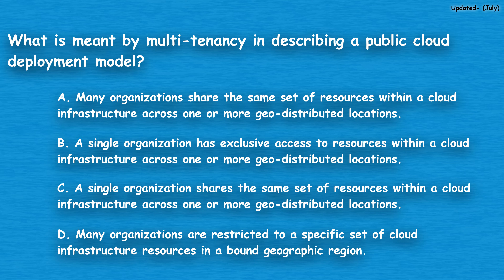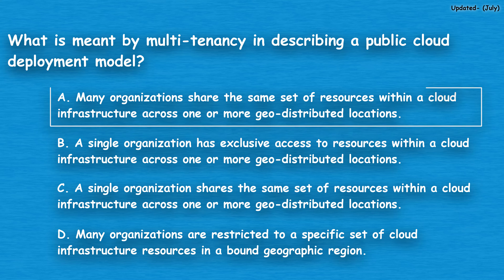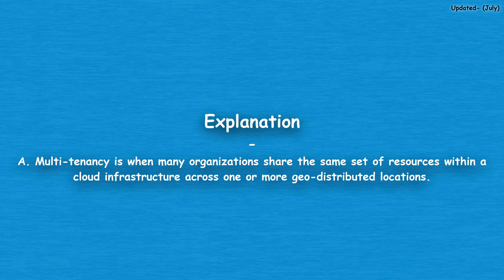The correct answer is option A: many organizations share the same set of resources within a cloud infrastructure across one or more geo-distributed locations. Multi-tenancy is when many organizations share the same set of resources within a cloud infrastructure across one or more geo-distributed locations.